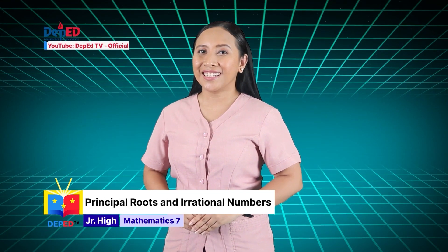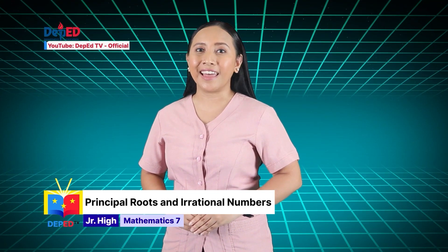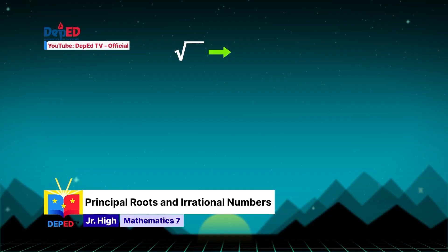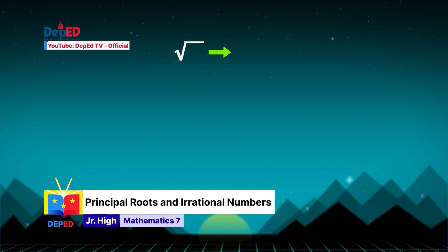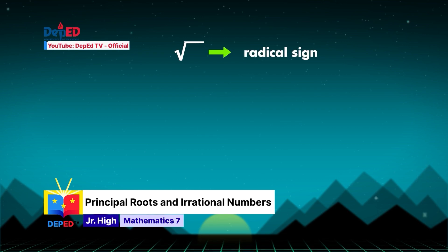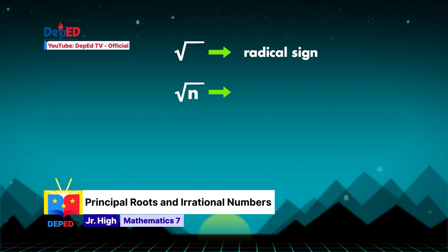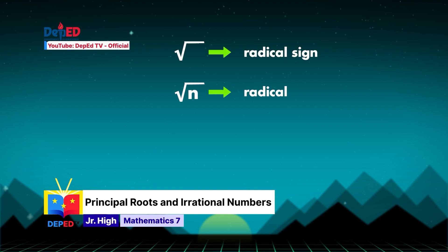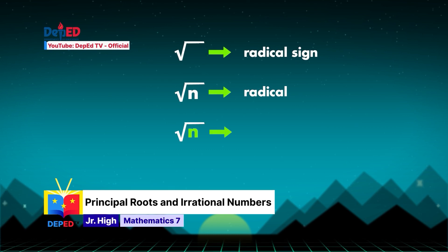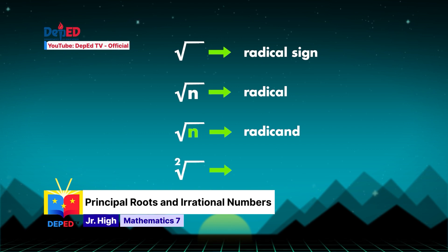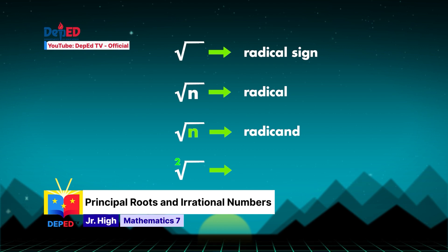As you can notice, some square roots resulted in a whole number and some resulted in a decimal. Based on your activity, have you noticed this symbol? We have been using this for quite some time now. Do you know what it is called? That is known as a radical sign. This expression of the radical sign, together with the number, is called a radical. The number under the radical sign is known as the radicand. There is an invisible number 2 here, which indicates that we are getting the square root of the radical. This number is known as the index.